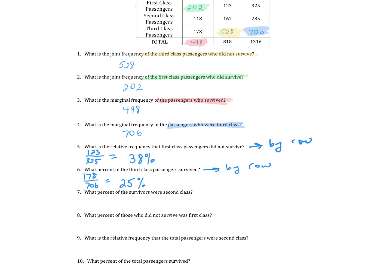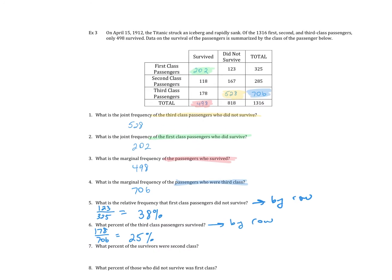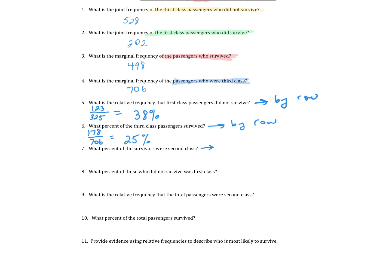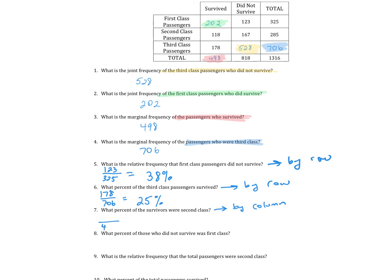Question 7: what percent of survivors were second-class? Now we're separating survivors from non-survivors, so this is by column. The survivor column total is 498, and 118 were second-class. So 118 over 498 is about 24%. Question 8: we're still looking by column at those who did not survive. The not-survived total was 818, and first-class not survived was 123. That ratio gives a percentage of 15%.